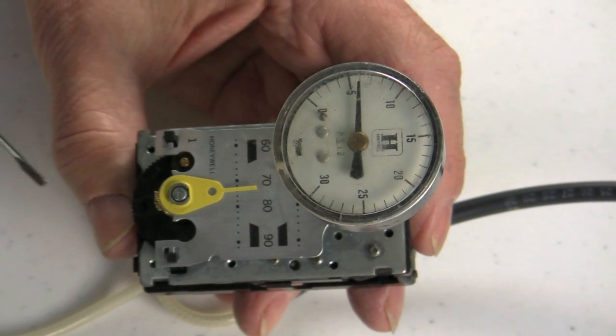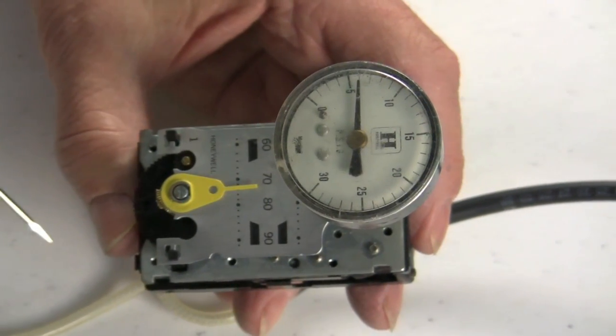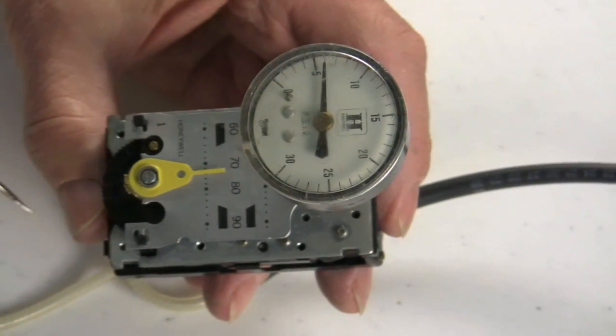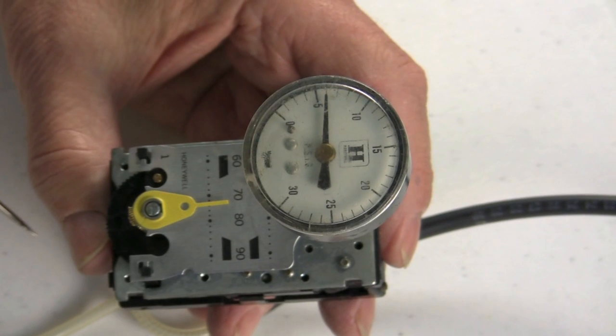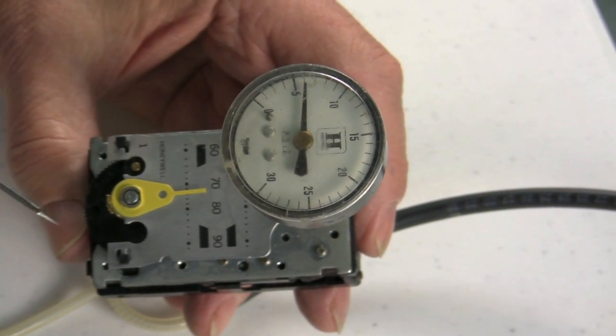To get the calibration pressure for this thermostat running that damper actuator, I have to add the 8 and the 13 together, which is 21, divide by 2, which is going to be 10 and a half pound calibration pressure for this thermostat running that actuator.